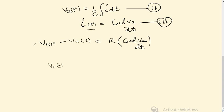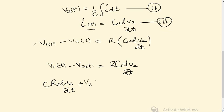V1(t) minus V2(t) is equal to RC dV2/dt. From here we can say RC dV2/dt plus V2 becomes positive...